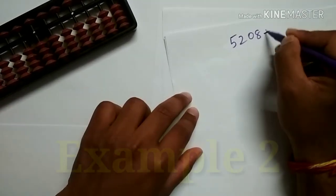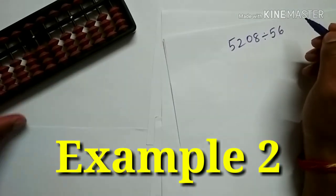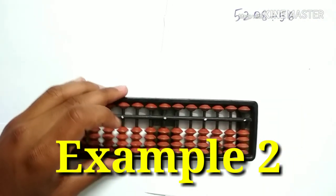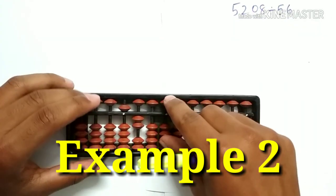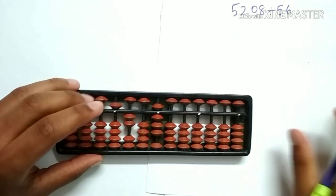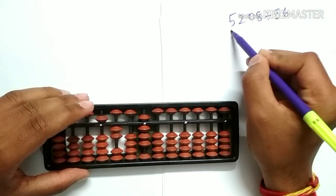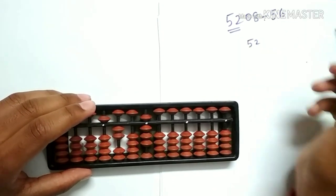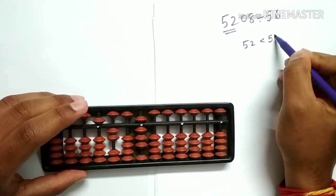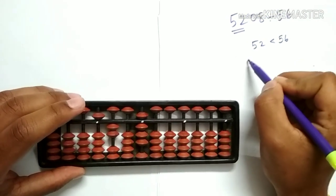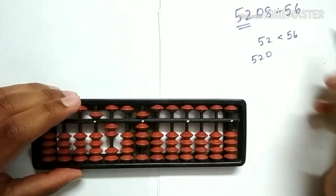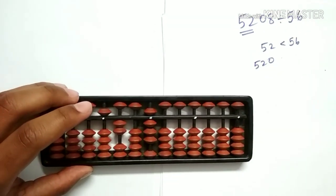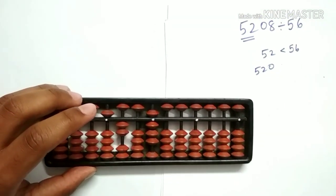Now let's try 5208 divided by 56. Let's place 5208 on the abacus first. Starting the division, check the first 2 digits. Here it is 52. 52 is less than 56, so let's go for 3 digits: 5, 2, 0, and try to check in the table of 56 for the nearest multiples.